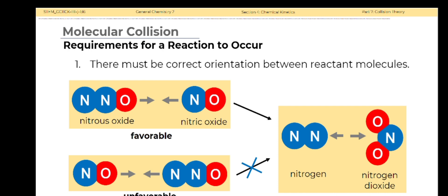With the factors mentioned, here are the requirements for a chemical reaction to occur. First, there must be correct orientation between reactant molecules. For instance, the reaction of nitrous oxide and nitric oxide to produce nitrogen and nitrogen dioxide. The oxygen of nitrous oxide colliding with the nitrogen of nitric oxide is the favorable collision in order for the products to form.